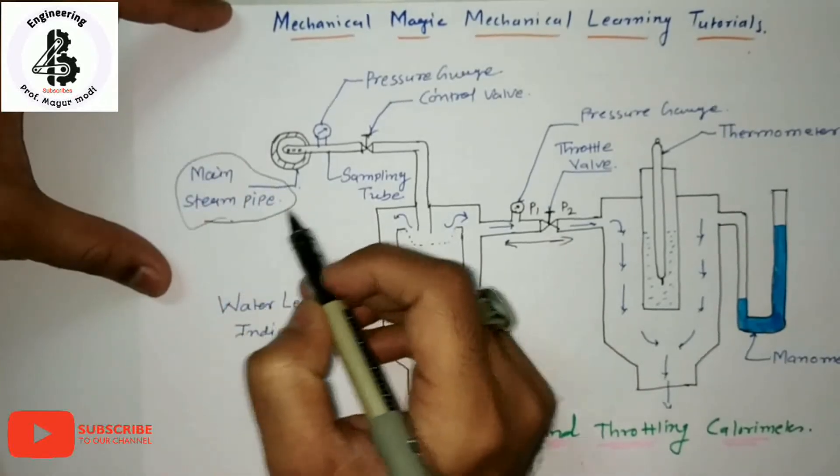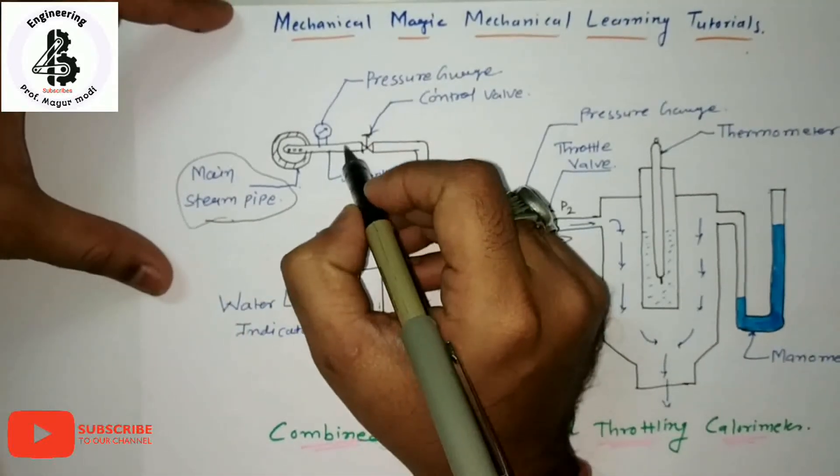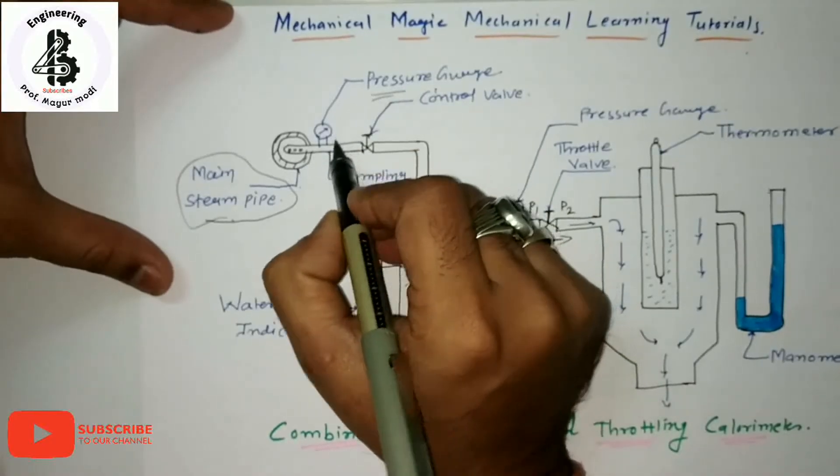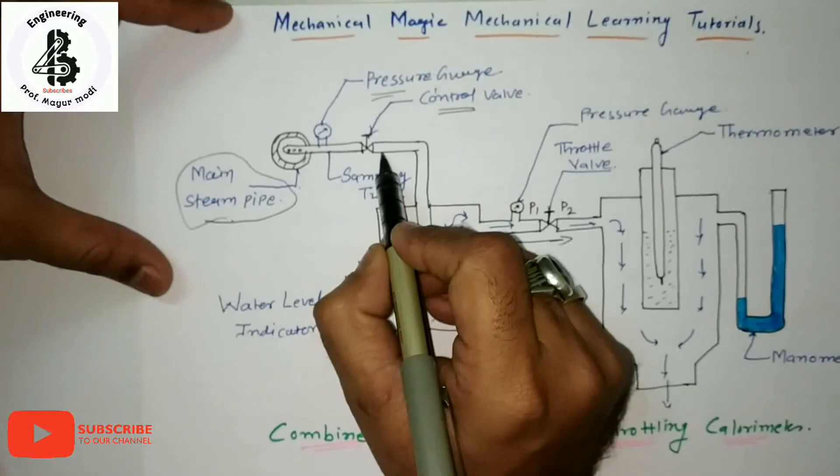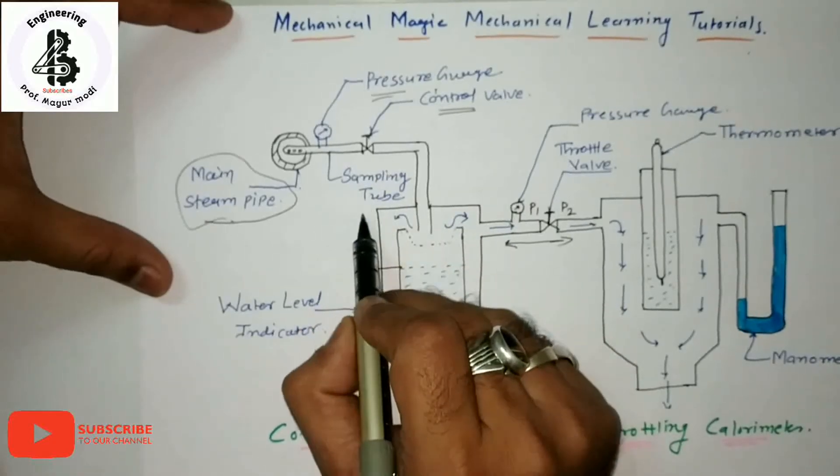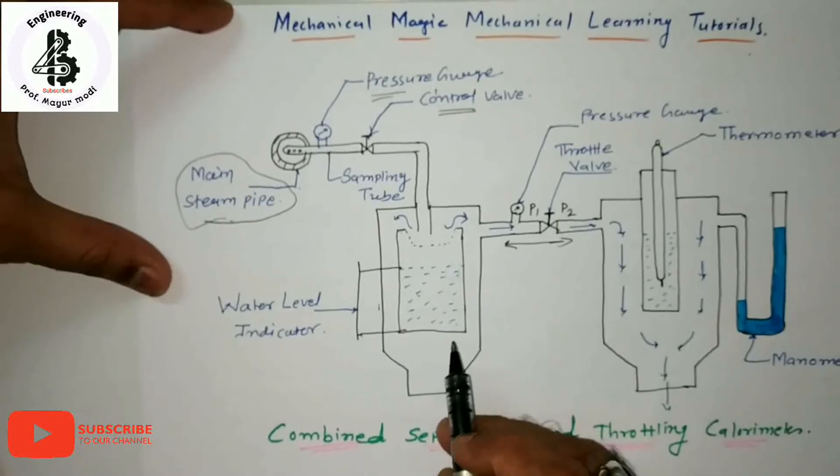Initially it will be measuring the pressure with the help of a pressure gauge. By the control valve, that particular steam passes through sampling tubes into water indicators.